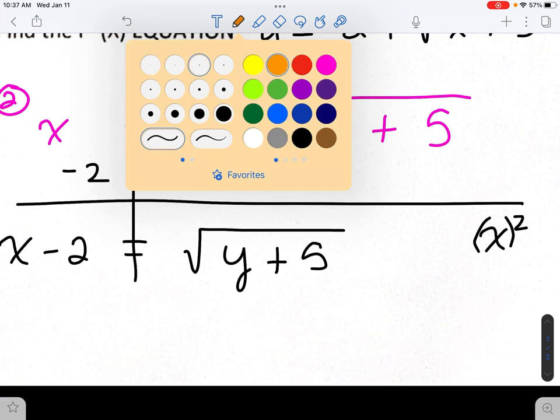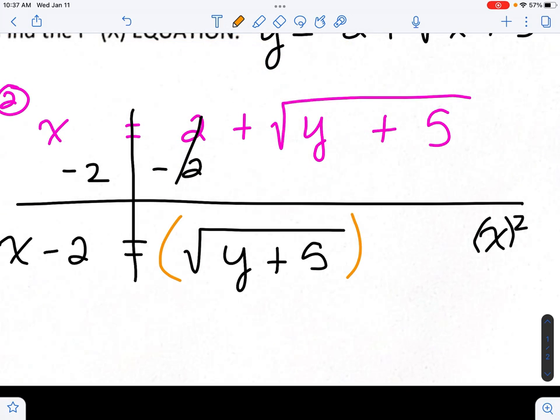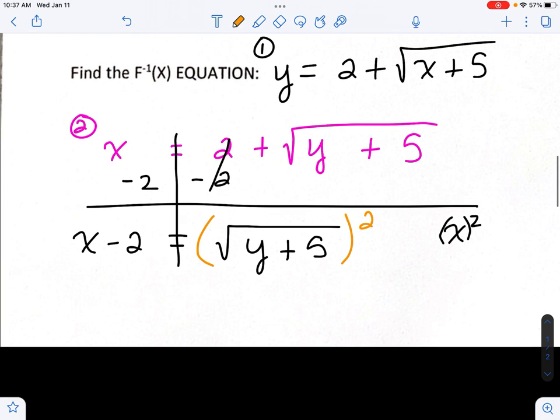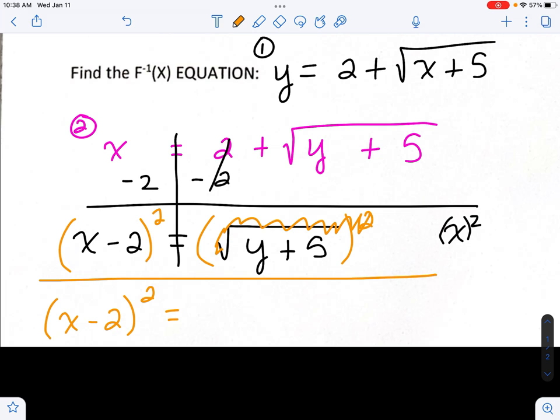To get rid of the square root, we are going to square both sides. Square both sides. That gives me x minus 2 squared equals. And if you look on the right-hand side, the reason why we're squaring, doing opposites, is because the little 2 gets rid of the house and it leaves us with y plus 5.